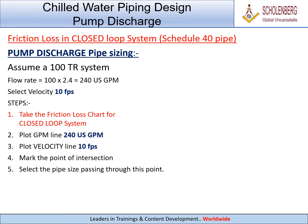Flow rate equals 100 multiplied by 2.4, equals 240 US GPM. Select velocity: 10 FPS.